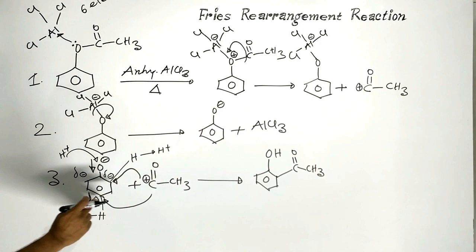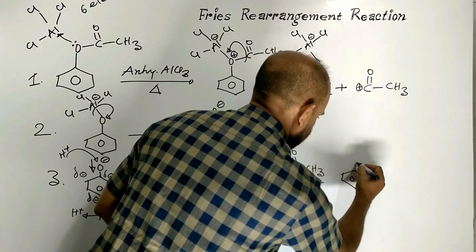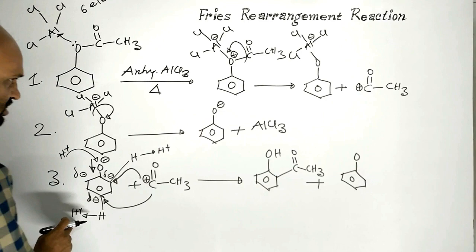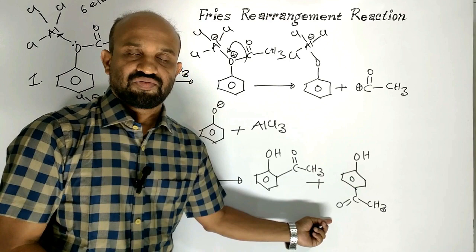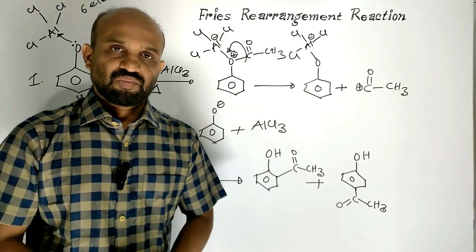When the electrophile attacks the para position, with the oxygen taking a hydrogen, the acetyl group bonds at the para position and paraacetylphenol or parahydroxyacetophenone is formed.